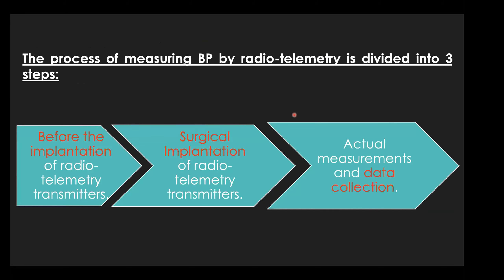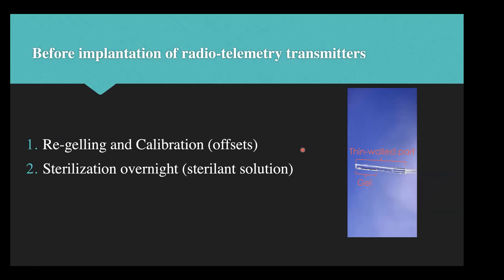The process of measuring blood pressure by telemetry is divided into three steps: before implanting the transmitter, the surgical implantation itself, and the actual measurements and data collection. Before implantation, you need to check that the gel layer on the thin-walled catheter tip is intact with no air bubbles. If there are air bubbles, you must re-gel the probes, then run offsets or calibrate them, and finally sterilize them overnight in a cold sterilant solution.